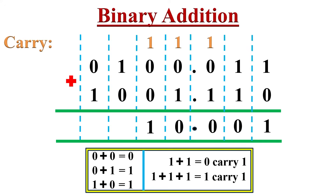Then we move to the next column: 1 plus 0 equals 1. In the last column, we have 0 plus 1, which is 1. So after adding these two binary fractional numbers, we got the answer 1110.001. This is how we can do binary addition.